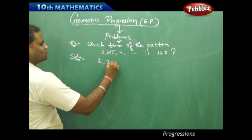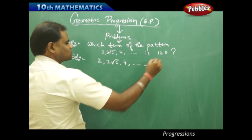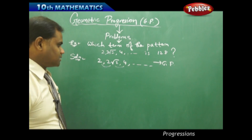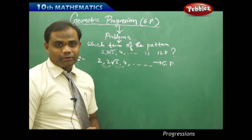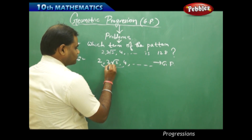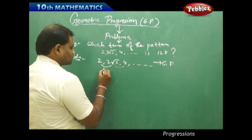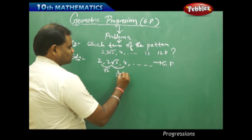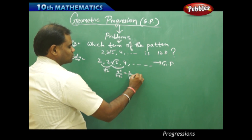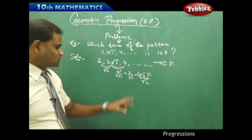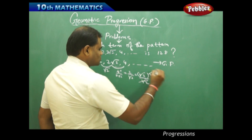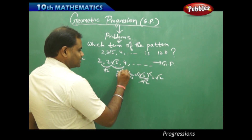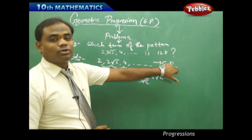In this case the sequence is 2, 2√2, and 4, and so on and so forth. Now here clearly let's test this for a geometric progression. The common ratio: 2√2 divided by 2 gives me √2. And here 4 divided by 2√2 gives me 2 by √2, which is √2 squared divided by √2, which also equals √2. So each of the common ratios is again √2. Therefore this is a geometric progression.